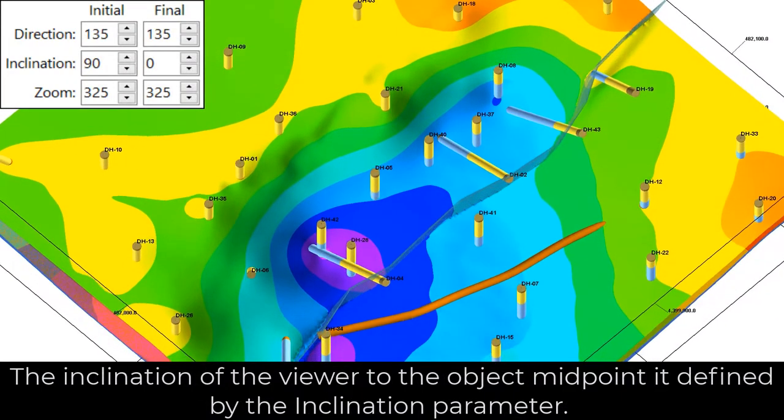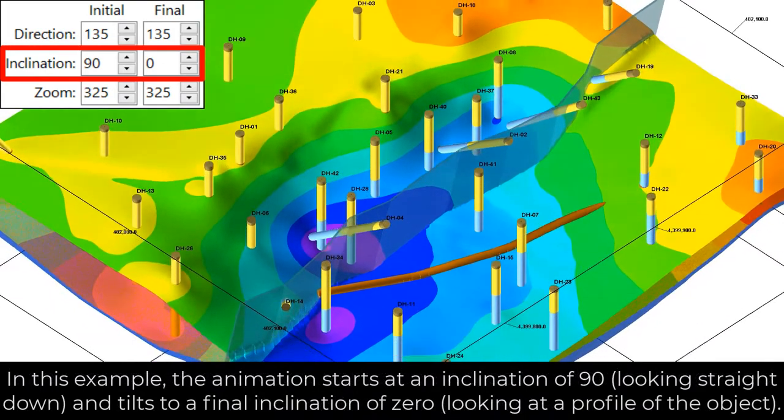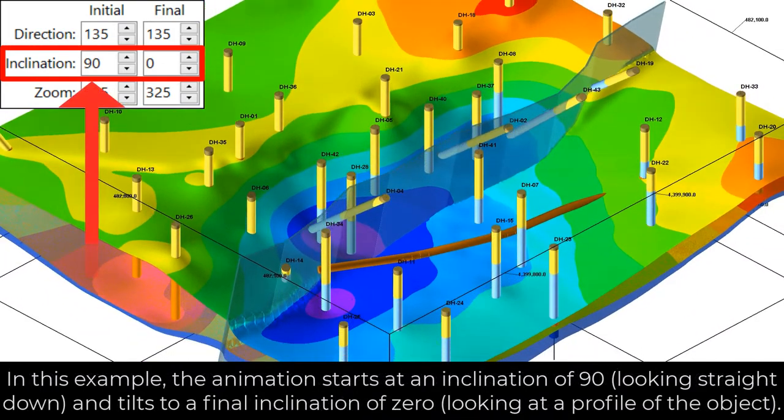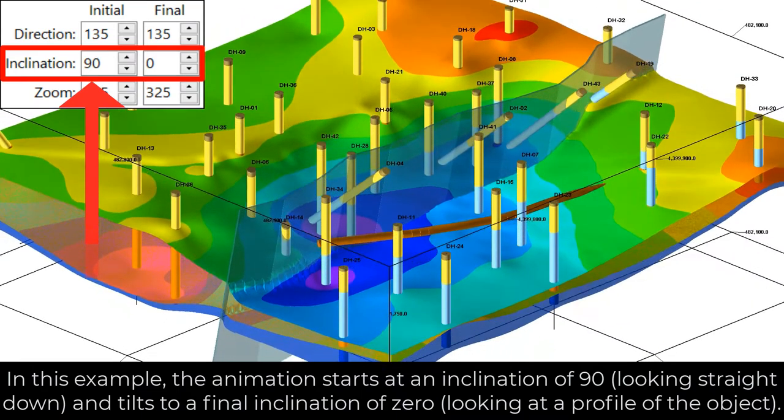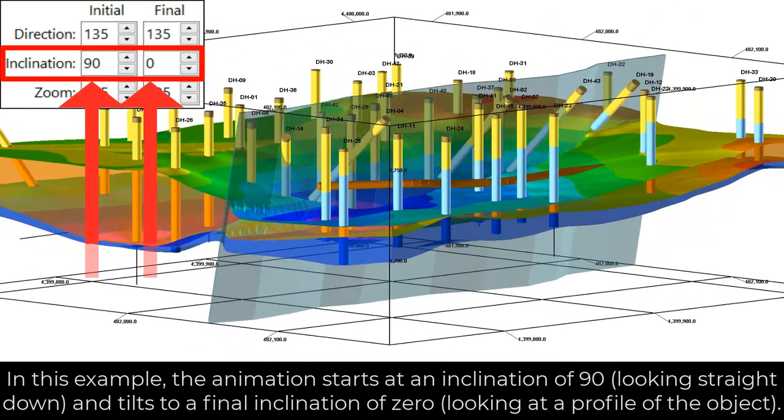The inclination parameter defines the viewer's inclination to the object midpoint. In this example, the animation starts at an inclination of 90 degrees looking straight down and tilts to a final inclination of zero, looking at a profile of the object.